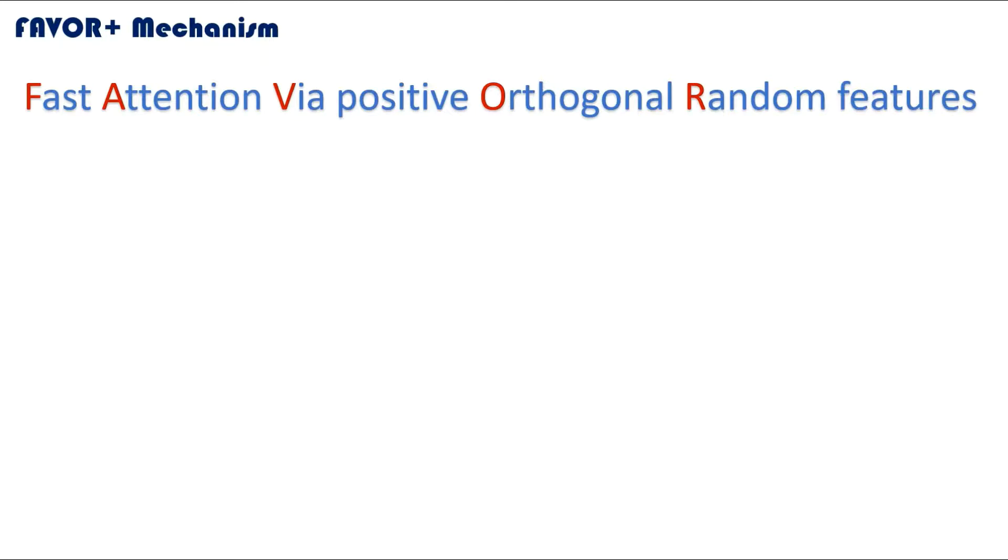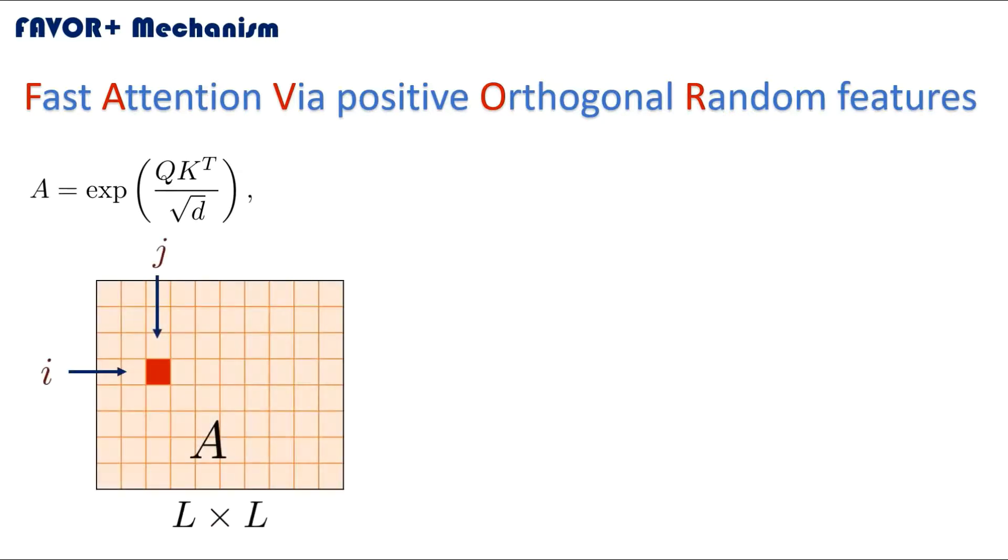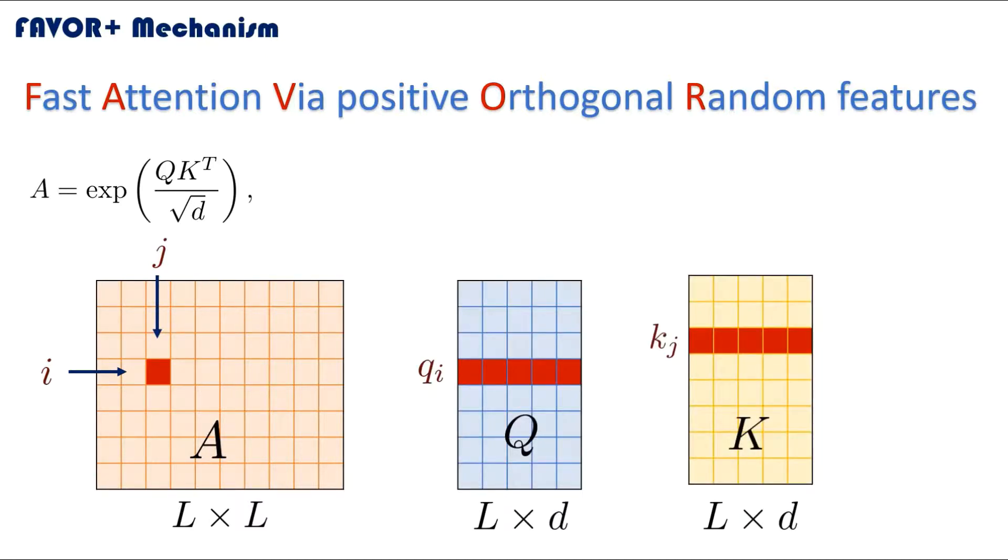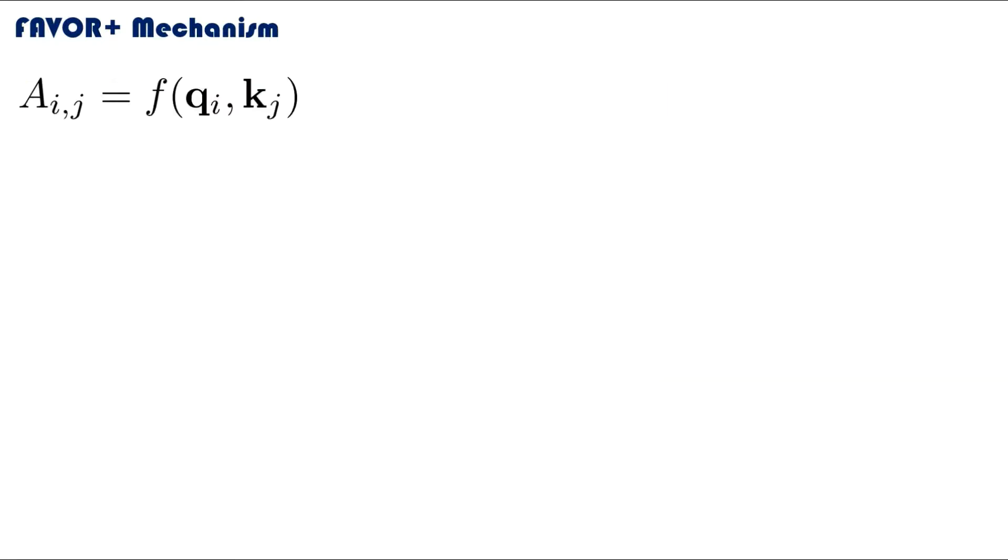As we know from the regular attention mechanism formula, the attention mechanism matrix is given by this formula. If we consider an element of A that is on the ith row and jth column, we know from our formula that it will be a function of the ith row of Q and the jth row of K. Hence we can say that this element is some function of the ith query and the jth key.